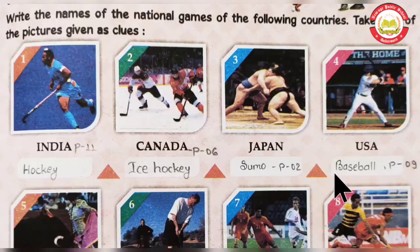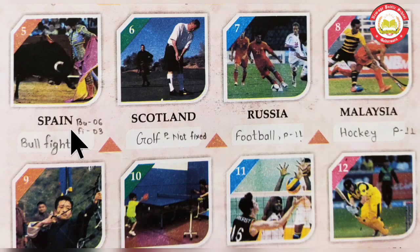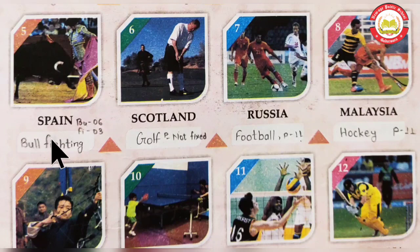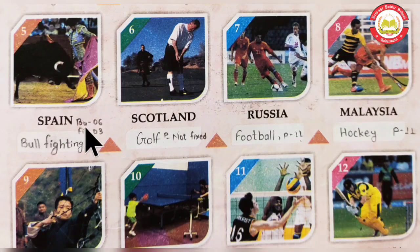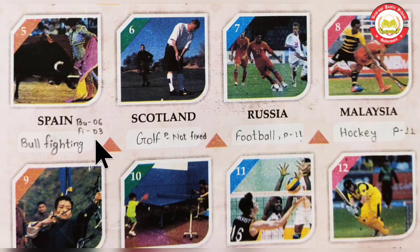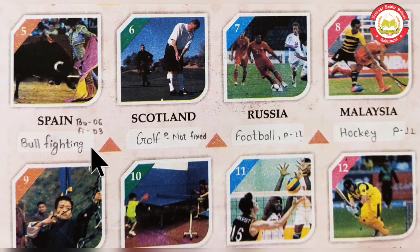The fifth one is Spain. The national game of Spain is Bullfighting. There are 3 fighters and 6 bulls. Two bulls per one player. In this game, the bulls participate and a cloth piece is used.